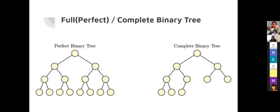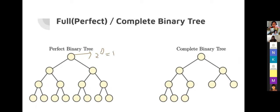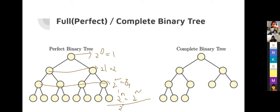A full or perfect tree means all levels have their full capacity. The first level can have 2^0 = 1 node, the second level 2^1 = 2 nodes, the third level 2^2 nodes, and the Nth level 2^N nodes. So a perfect binary tree has 2^(N+1) - 1 nodes total given N levels.